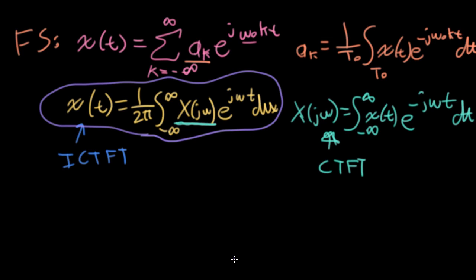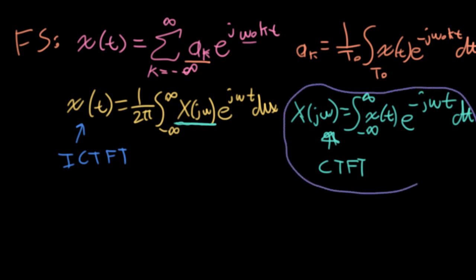And within that context, the continuous time Fourier transform is sort of secondary. It's just kind of a trick that lets us find what these weights, big X of j omega, need to be.